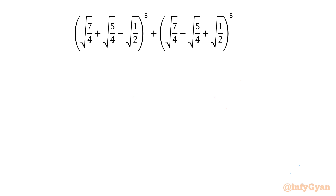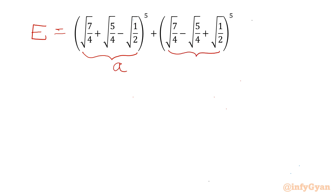Welcome back to Infigyan, my dear friends. In this video we are going to take up another challenging question from Radical Mathematics. We have to evaluate the given expression. Let's call this expression equal to E, and straight away I will consider the first bracket equal to A, and the second bracket equal to B.